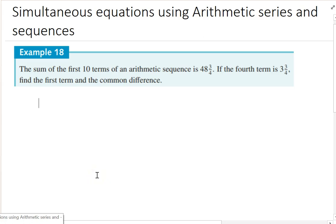So a beautifully sneaky question here. Simultaneous equations using arithmetic series and sequences. Let's look at the question. The sum of the first 10 terms of an arithmetic sequence is 48 and 3 quarters, and the fourth term is 3 and 3 quarters.